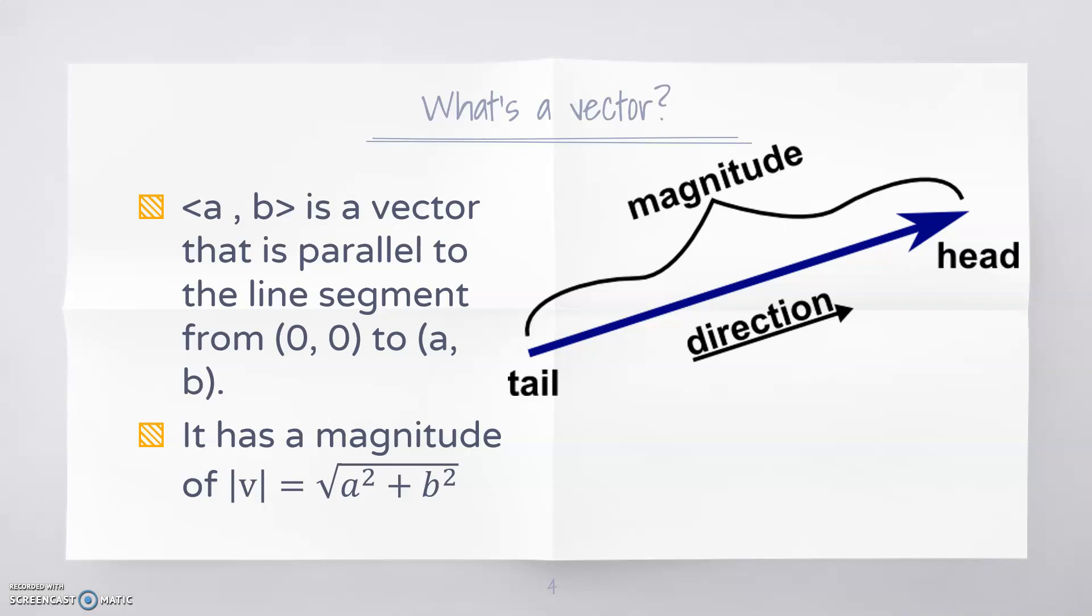The magnitude of a vector is its length, so you can find the magnitude by using the Pythagorean theorem to find the length. A vector has a tail and a head. The head is towards a,b and that tells you the direction of travel.